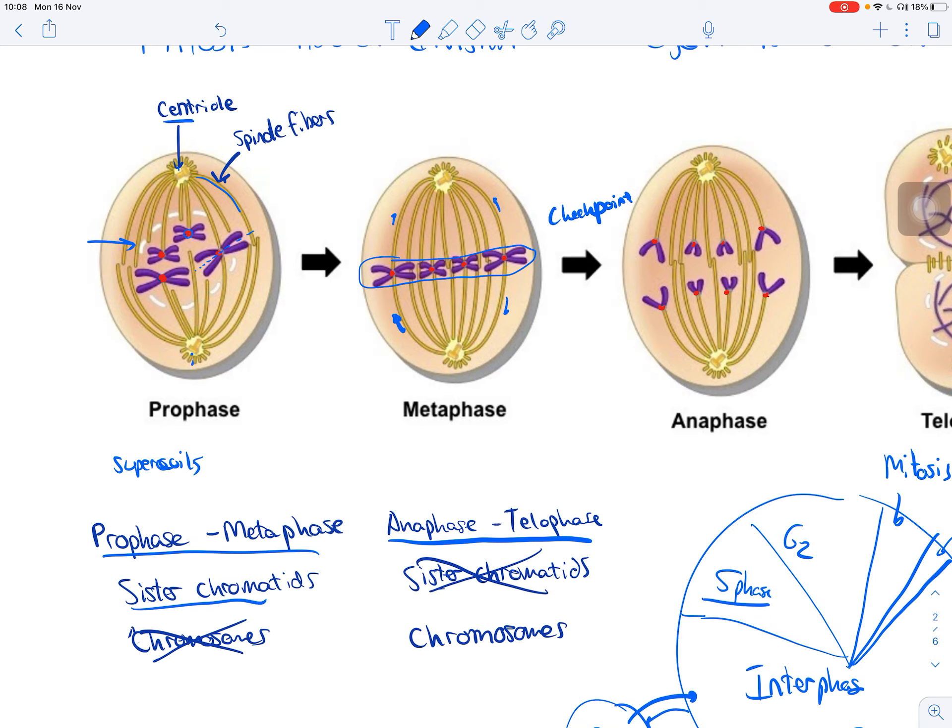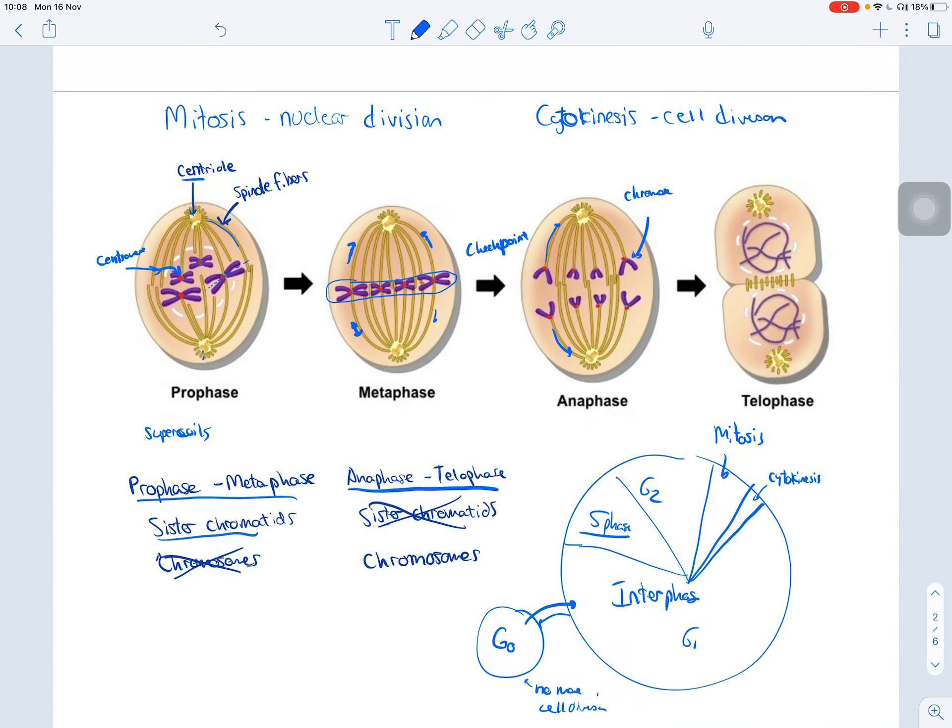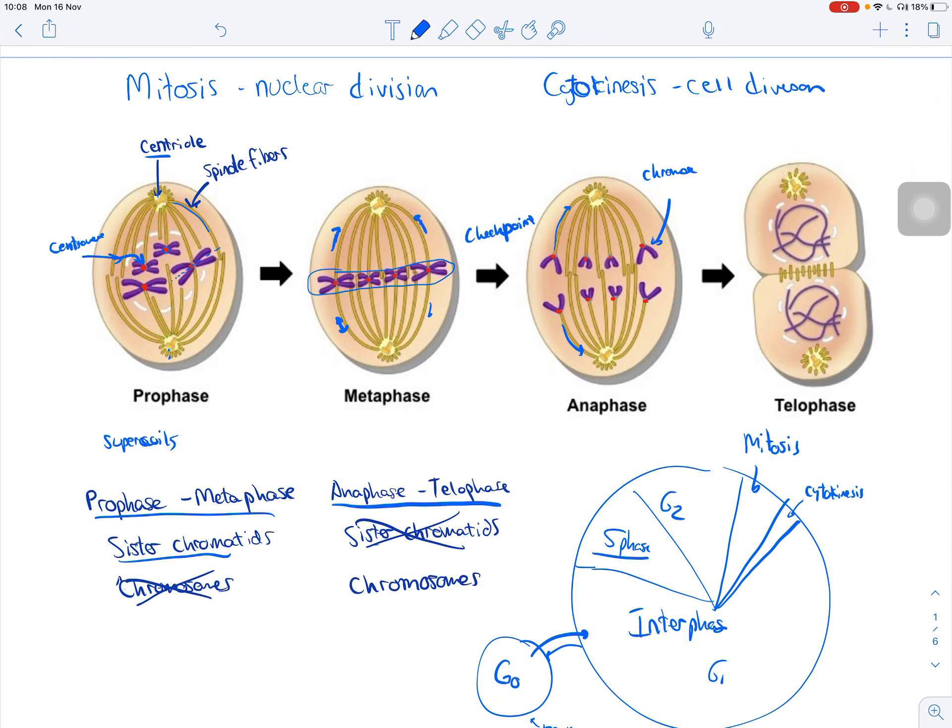They put some strain and they start to pull and move back towards the centrials here. And what that causes is those centromeres to split. And the chromosomes, the sister chromatids split, and now we have chromosomes. And those chromosomes move to the opposite poles of the cell. And don't forget, these are genetically identical.